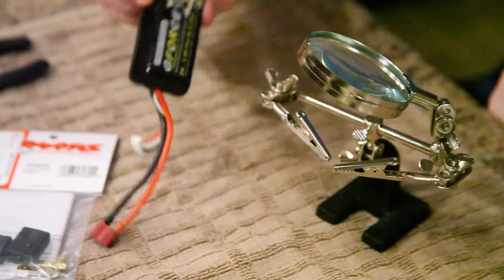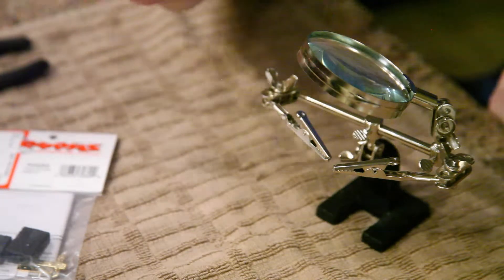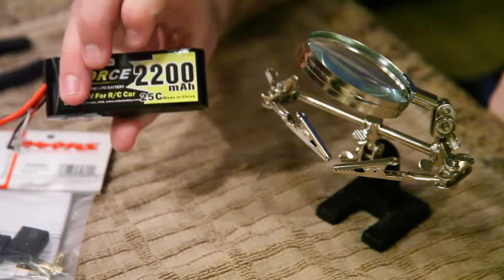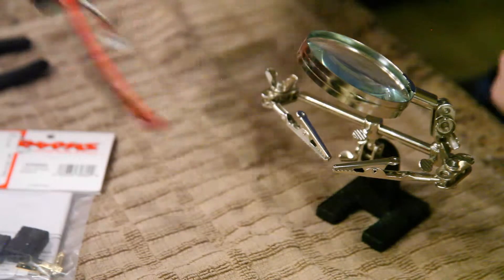In this case it's a 2S LiPo 2200 milliamp hour pack designed to fit the small, these small little ones designed to fit in a 1/16th scale Traxxas vehicle and so I'm going to show you how to do that real fast.